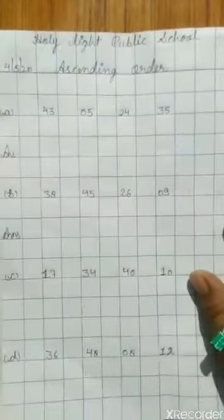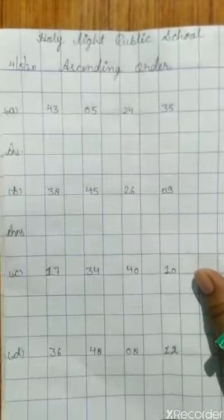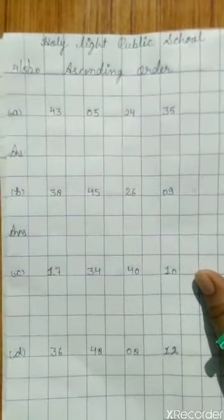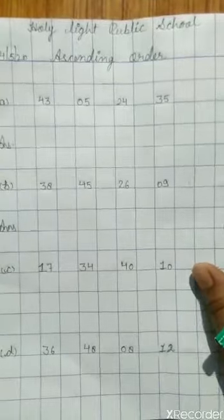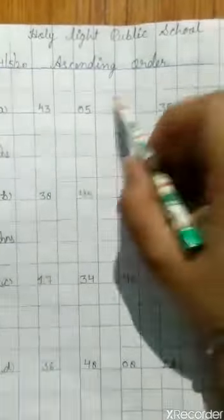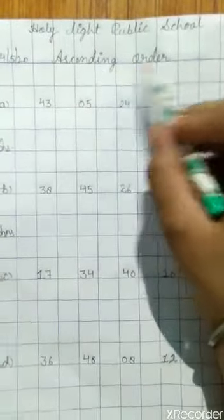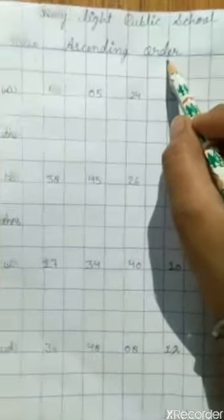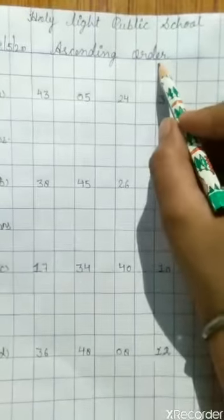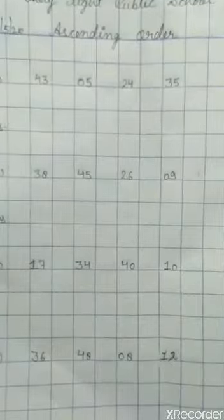Hello children, in this video you will learn about ascending order. Today I will teach you how to write in a proper way. Ascending order - first you have to learn what is the meaning of ascending order. Ascending order का मतलब होता है बढ़ता हुआ क्रम।